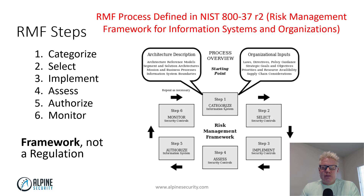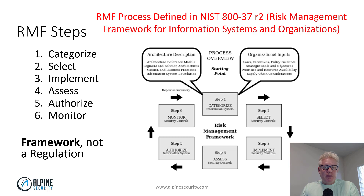The first step is to categorize the information system. There are a couple of inputs that go into the categorization. There's the architecture description — the architecture reference models — and the system boundaries, which is extremely important: how that system interfaces with other systems and what defines the boundary. There are also organizational inputs that play a role in the categorization. This could be laws, directives, or how you handle protected health information under HIPAA, for instance. Those two inputs — the architecture description and the organizational inputs — feed into the categorization.